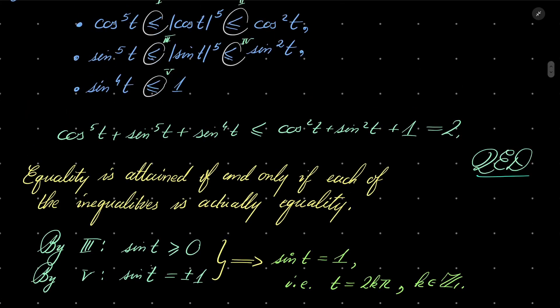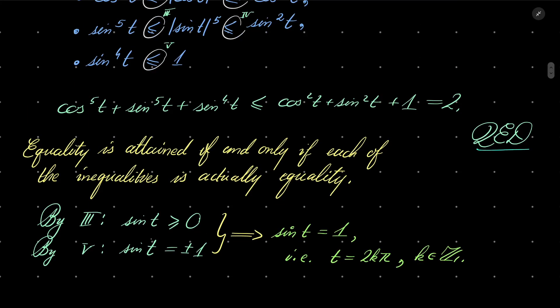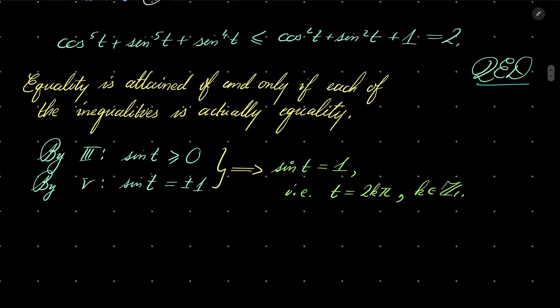Well, so let's mark them. Notice that, or let's plug in directly to our inequality. Then, cosine to the 5th power of t plus sine to the 5th power of t plus sine to the 4th power of t, it's cosine to the 5th power of 2k. Okay, sorry, I made a terrible mistake. t equals pi over 2 plus 2k pi. Sorry about that.